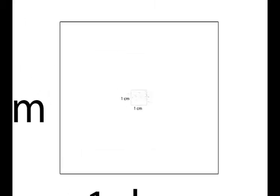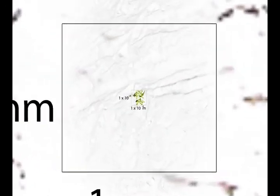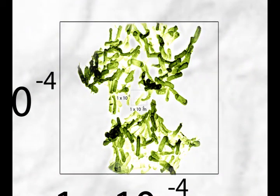Zooming in now to the tenth, the hundredth, the thousandth, the ten thousandth — assisted, we can see a colony of bacteria called Clostridium difficile, C. diff for short.